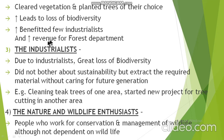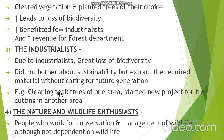The third stakeholders are industries. Industries run on forest products, and industrialists started cutting trees for their own interest, causing a great loss in biodiversity. They did not care about sustainability and extracted materials without caring for future generations. For example, if teak trees in one area were exhausted, they would move to the next area to cut more.